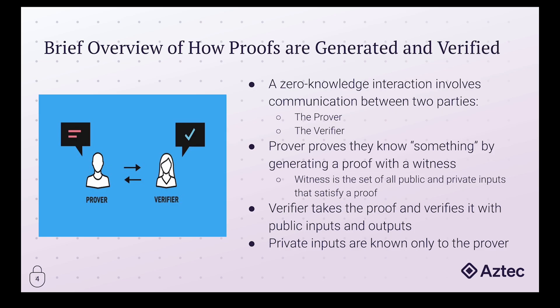What the prover does is generate a proof, and they do so with a witness. A witness is taking a zero-knowledge circuit and providing it the set of public and private inputs and outputs that generate a valid circuit where all constraints are met. They will use this information to generate a proof and then pass it to the verifier. The verifier will then take this proof and any public inputs and outputs required, and be able to verify in reasonably quick time whether or not the proof is valid. It's absolutely essential that the prover be in control of all private inputs, because that's where the ZK aspect comes in.